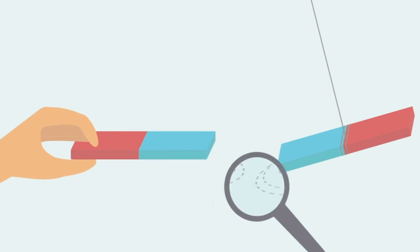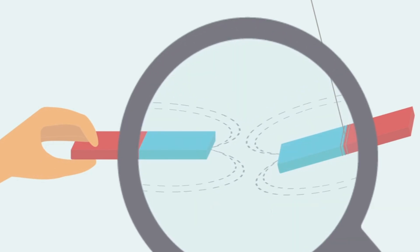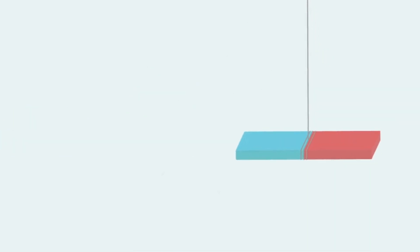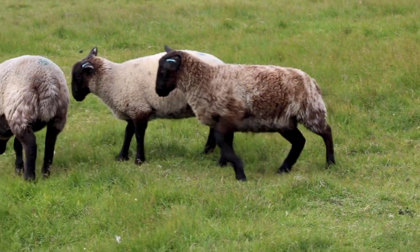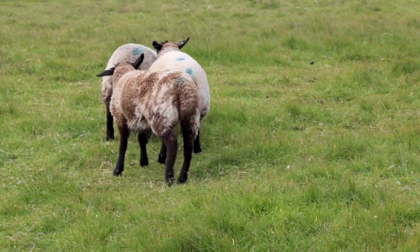If you get two north pole magnet ends or two south pole magnet ends and try putting them together, they will push away from each other. But if you take a north pole magnet and put it near a south pole magnet end, they will pull towards each other.